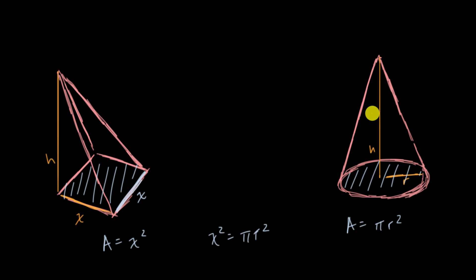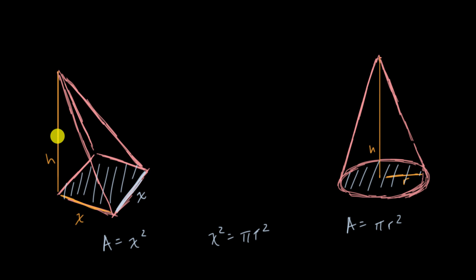So what we need to figure out is: at any point along this height, do these figures have the same cross-sectional area? To think about that, let's pick an arbitrary point along this height. For simplicity, let's pick halfway along the height, although we could do this analysis at any point. So halfway along the height for the pyramid, and halfway along the height for the cone.